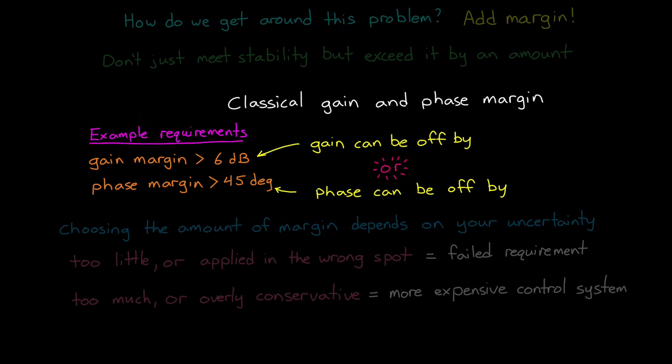For classical gain and phase margins, we're representing our uncertainty as purely gain error, or purely phase error. And when we say that we require 6 dB and 45 degrees margin, that means we've assessed our system and our model and believe the errors to be bounded by those values.